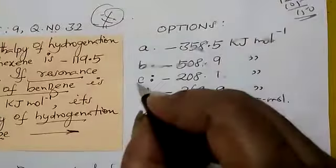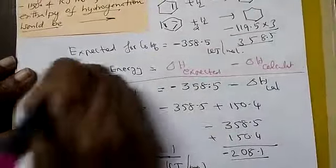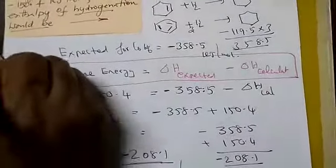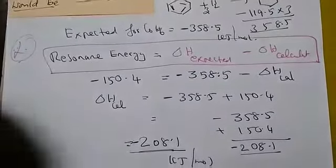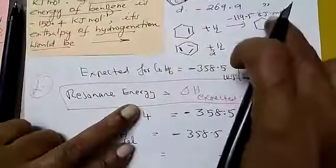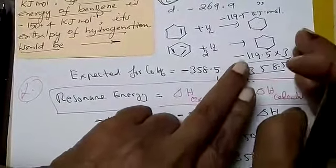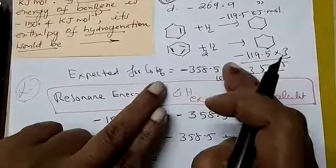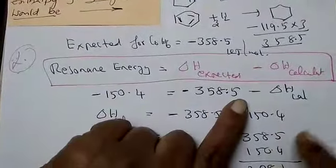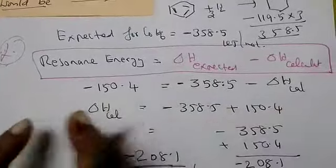This seems difficult but is very easy and very, very important. We can expect this. Record this formula in your file. Again repeating: for one double bond this much energy, for benzene three double bonds into three. This is what we expect for hydrogenation of benzene as per calculation. Experimental value is what we observe.